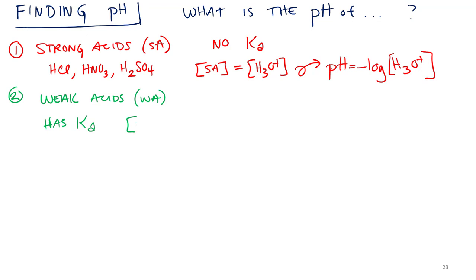So, your concentration of your weak acid does not equal your hydronium. It means it's going to set up equilibrium. So, what do you have to do? You have to set up ice table and solve for hydronium concentration at equilibrium.